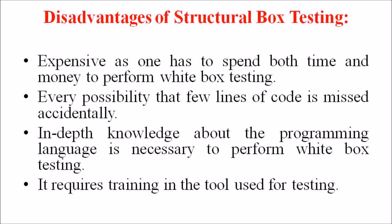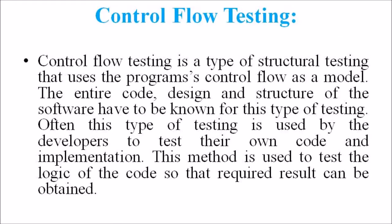The structural testing types are divided into four. The first is control flow testing, which is a type of structural testing that uses the program's control flow as a model. The entire code design and structure of the software has to be known for this type of testing. It is often used by developers to test their own code and logic so that a required result can be obtained.